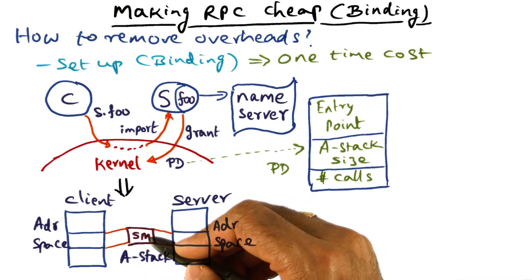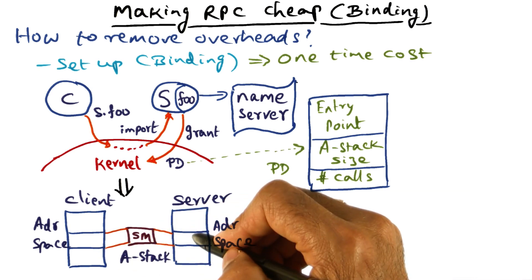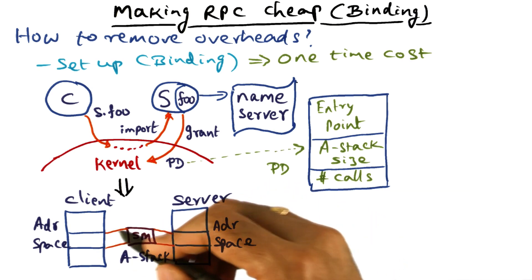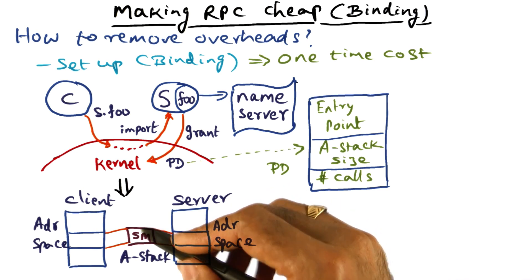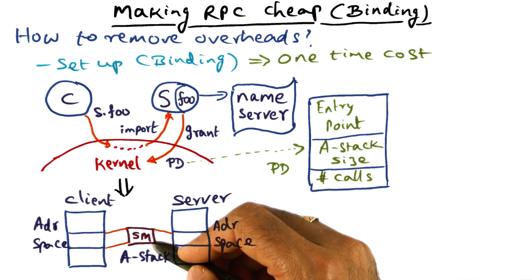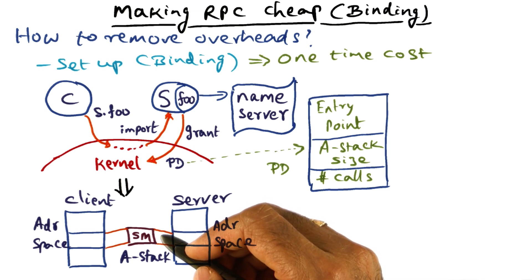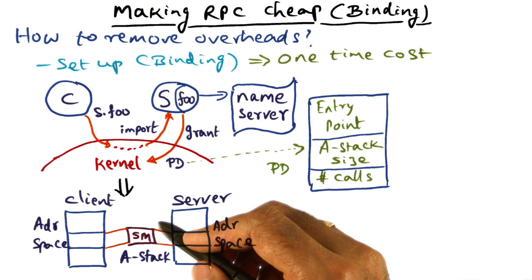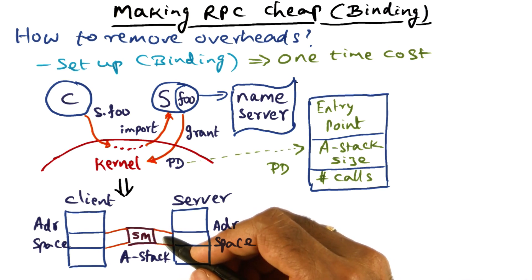Once this shared memory has been set up and mapped into the address space of the server and the client, the client can write into it, the server can write into it, the client can read from it, and the server can read from it — no mediation by the kernel. In other words, what we have accomplished is getting the kernel out of the loop in terms of copying.